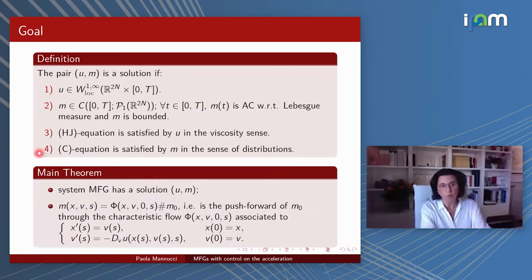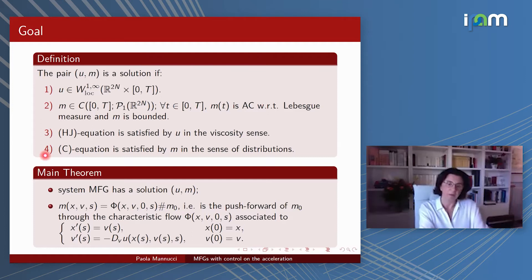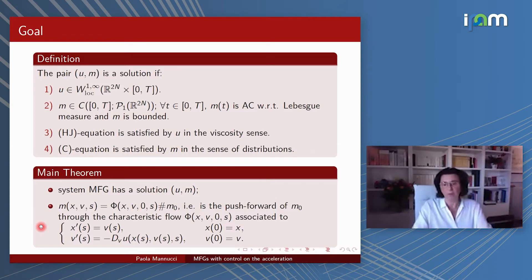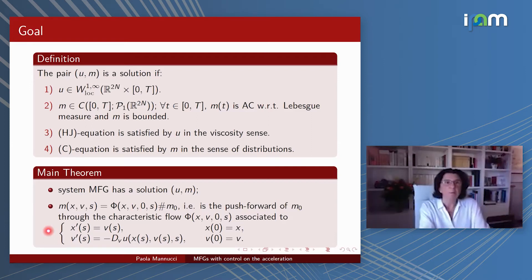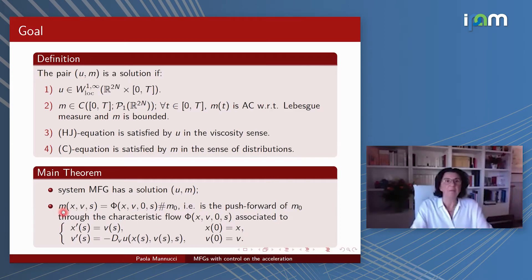Our main result is the following: the mean field game system has a solution (U, M). Very importantly, we want to represent M as a push forward of M0 through the characteristic flow phi associated to this system. This system gives the optimal trajectories of the optimal control problem associated to the Hamilton-Jacobi equation. Roughly speaking, this formula means that for every starting point (X, V), the distribution of agents M follows the optimal trajectories associated to the Hamilton-Jacobi equation.